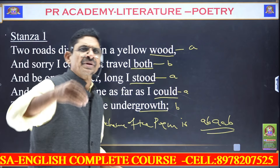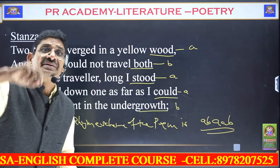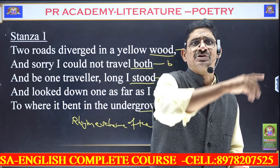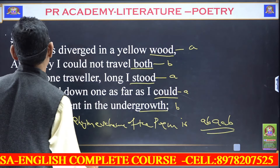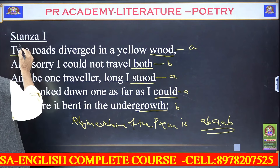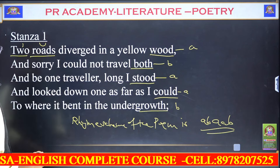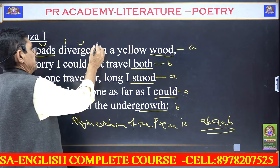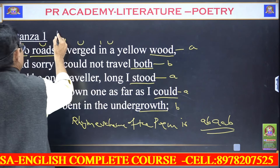The poem is written in iambic tetrameter, though one extra syllable is added as a ninth syllable for poetic purpose. In the line 'Two roads diverged,' 'two' is an unstressed syllable and 'roads' is stressed, making an iamb. 'Diverged' follows the same unstressed-stressed pattern.